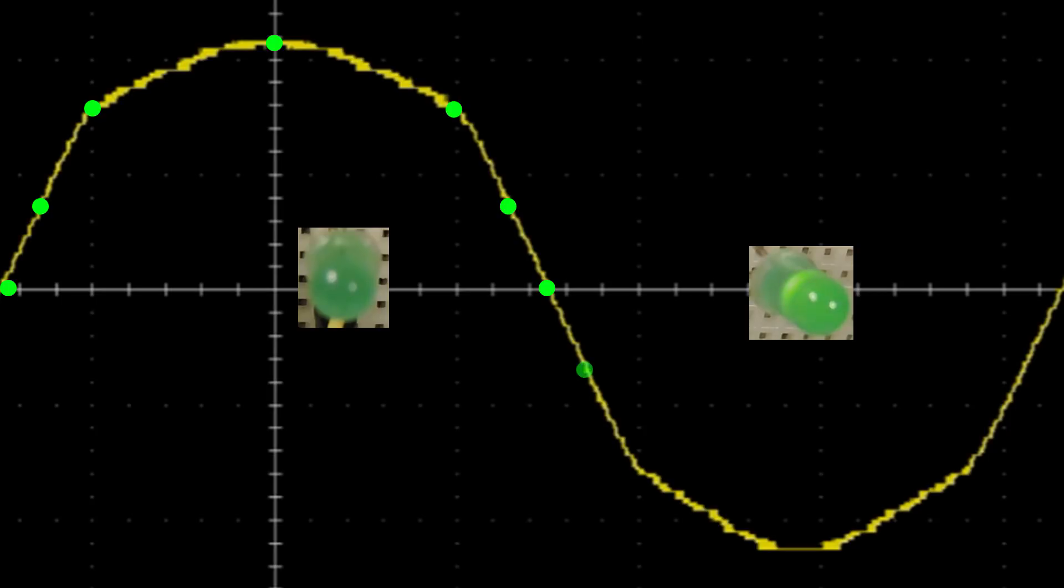Now on the negative cycle the P channel is conducting and as we continue more negative it gets brighter until it is peak. Then of course it's going to start going down until we reach zero.